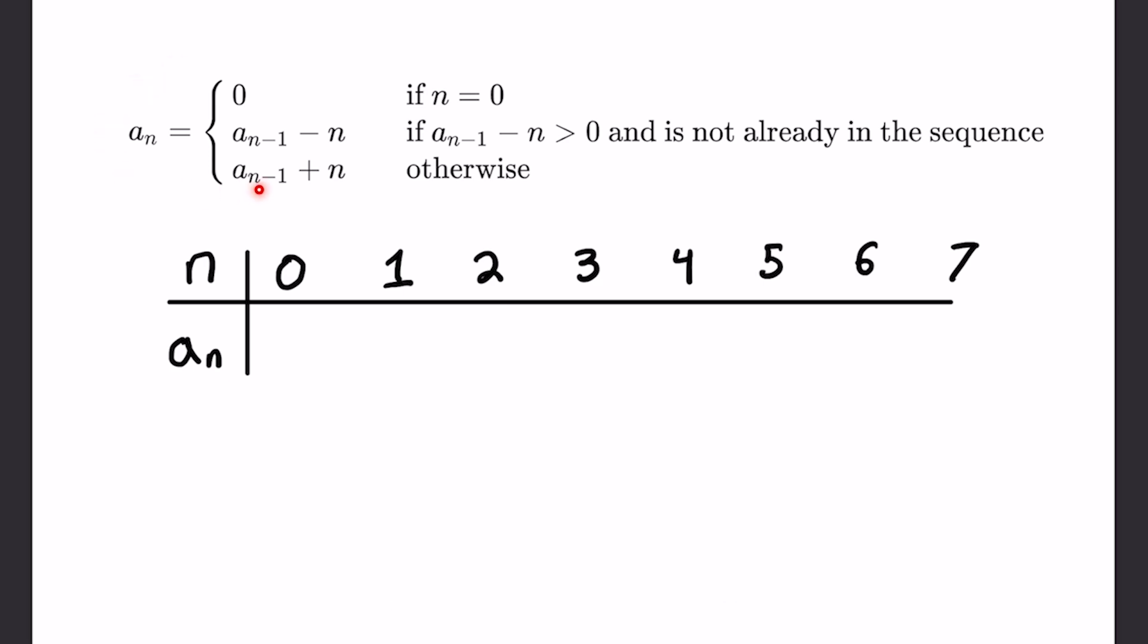You can see that here and it's defined as follows. This first thing gives you the first element a_0 where n is zero and then there's two ways to generate the next element. You can see that a_n depends on its previous element and there's a condition. If a_{n-1} - n is greater than zero and is not already in the sequence, the sequence is generating unique numbers, and it equals this otherwise. So let's go through some elements.